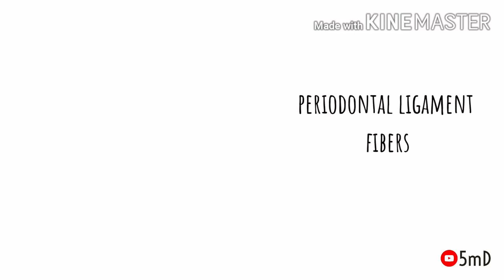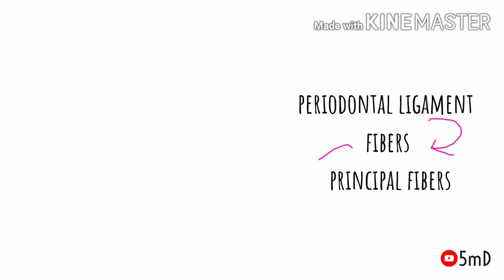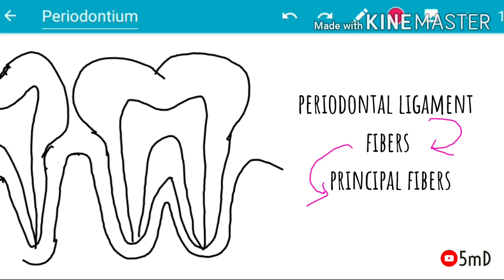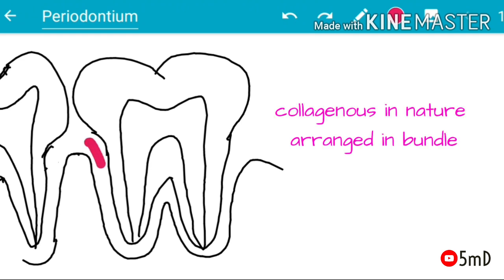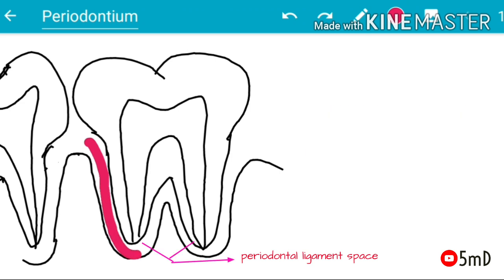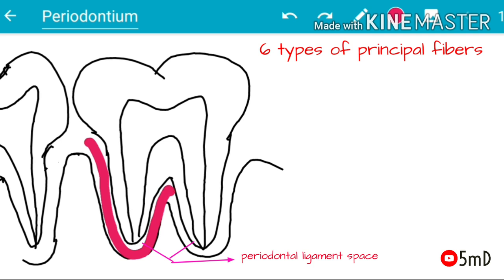In the periodontal ligament, the most important component is fibers — specifically principal fibers, which are collagenous in nature and arranged in bundles. According to Karansa, there are six types of principal fibers in the periodontal ligament.